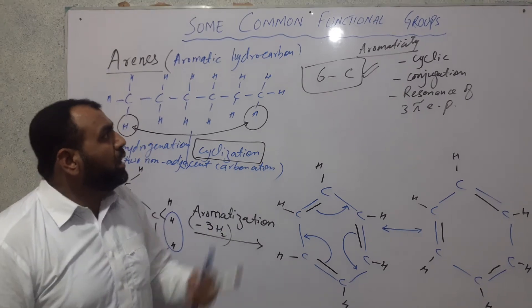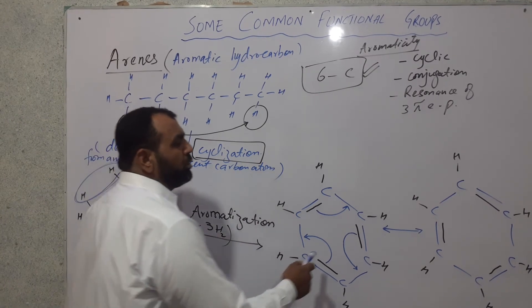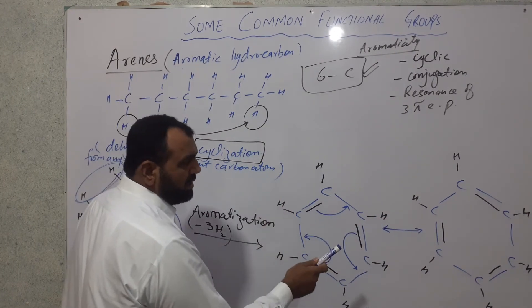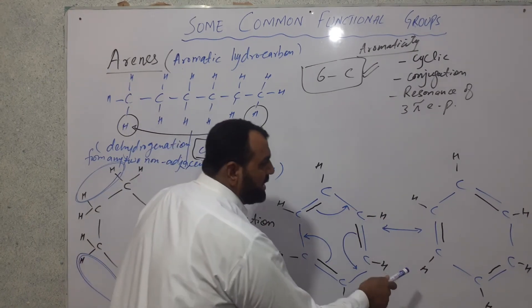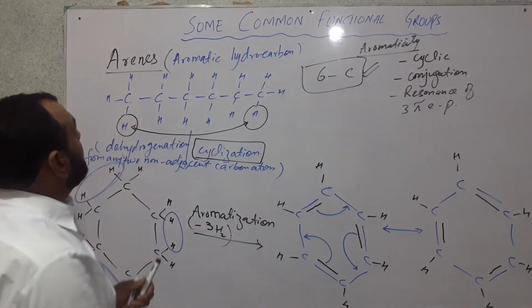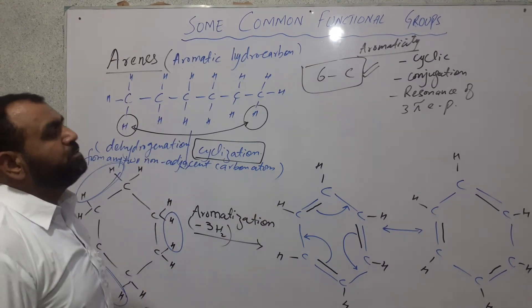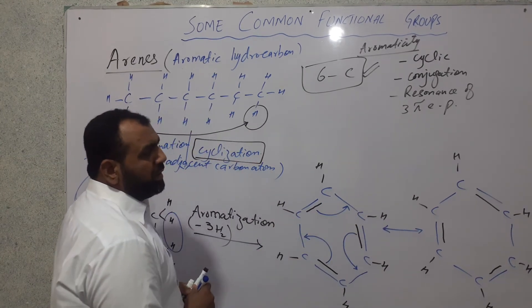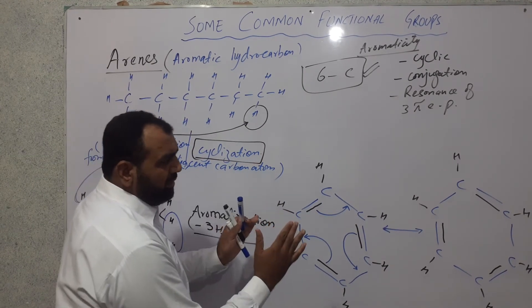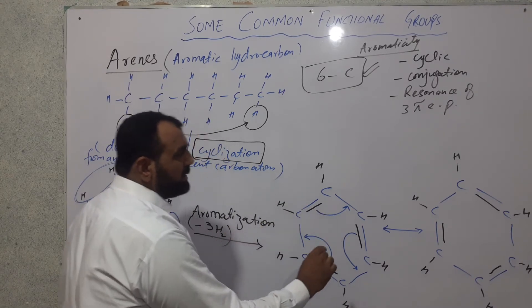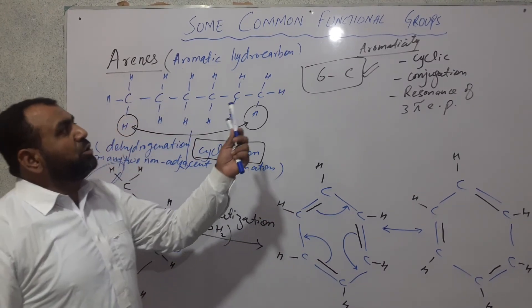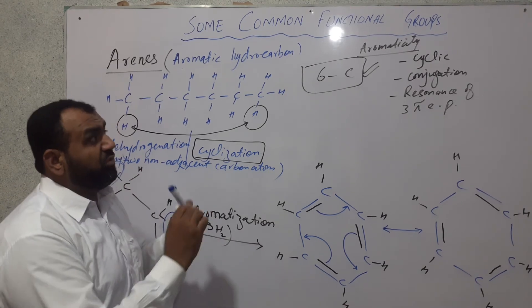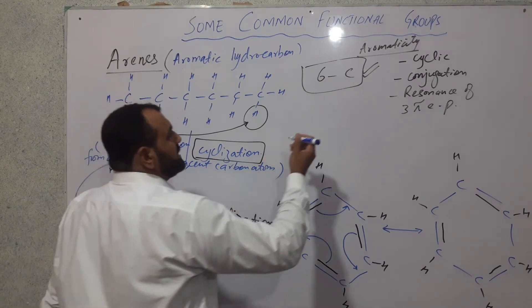All hydrocarbons which have at least one benzene ring in them are called benzenoids, and all benzenoids are considered aromatic hydrocarbons. For heterocyclic hydrocarbons — which have one atom other than carbon in the ring — aromaticity starts from five-membered rings.